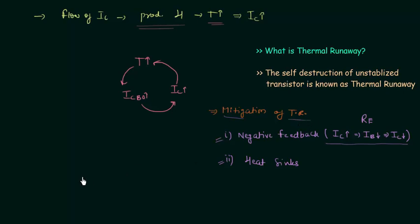In the next lecture I will explain what stabilization is and what the different stability factors are. Stabilization is important because we don't want the operating point to shift. The operating point shifts because of change in the collector current, and thermal runaway is another reason for which we use stabilization.